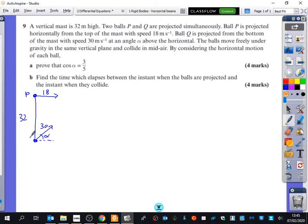Ball Q is projected from the bottom of the mast with speed 30 at an angle of alpha. And this is Q down here. It says the balls move freely under gravity in the same vertical plane and collide in mid-air. By considering the horizontal motion of each ball, clearly this one is going to move in this pathway, this one in this pathway. When they get here, there's something very important about that point. What can you tell me about that point? The distances are the same. Tell me more. And the time is the same.